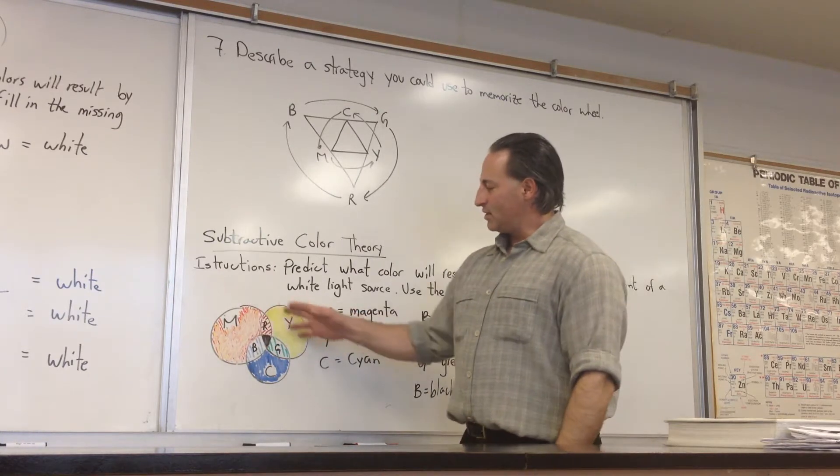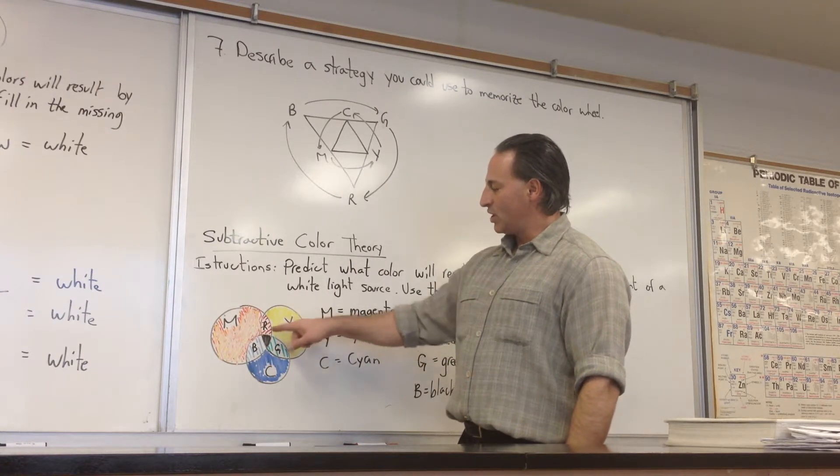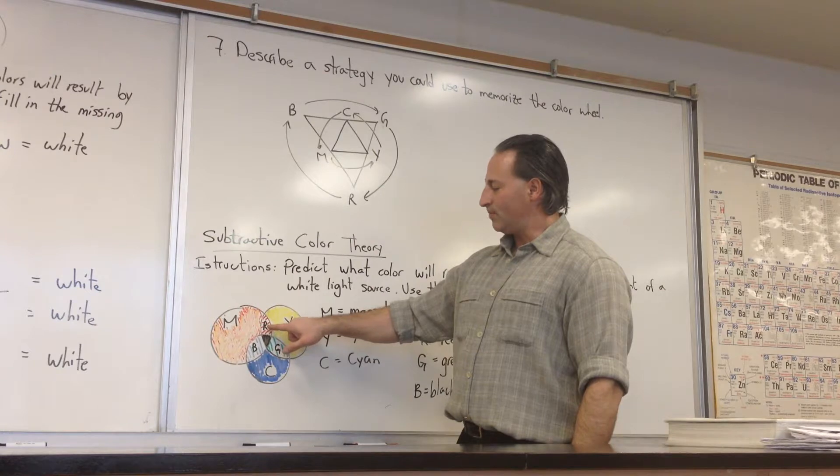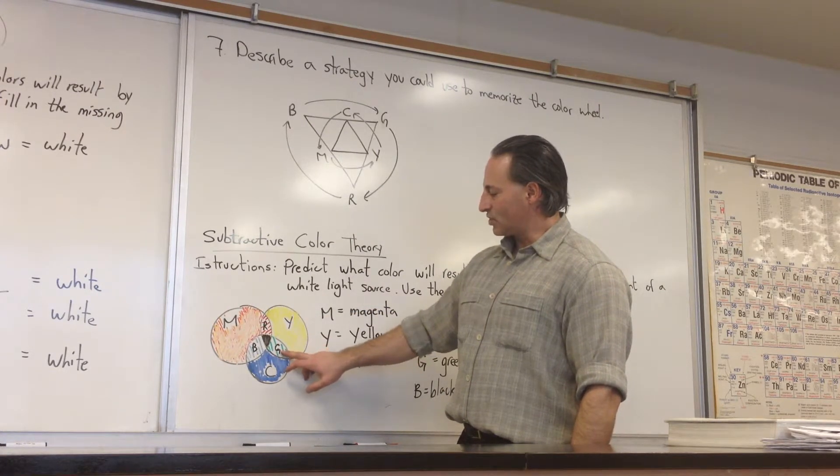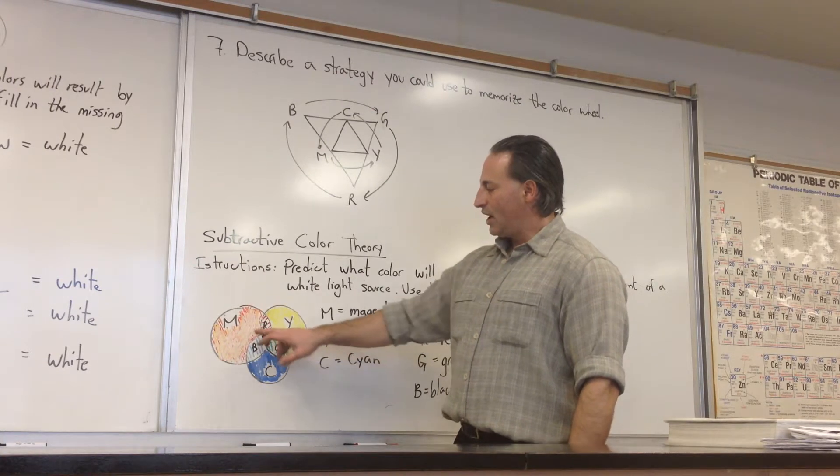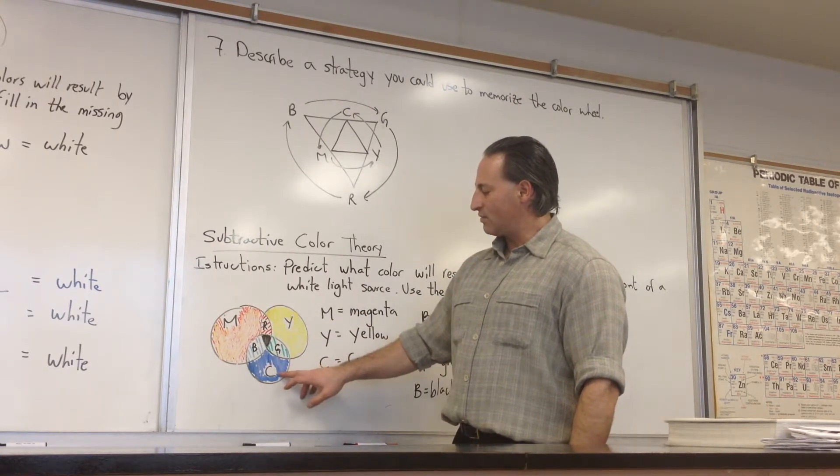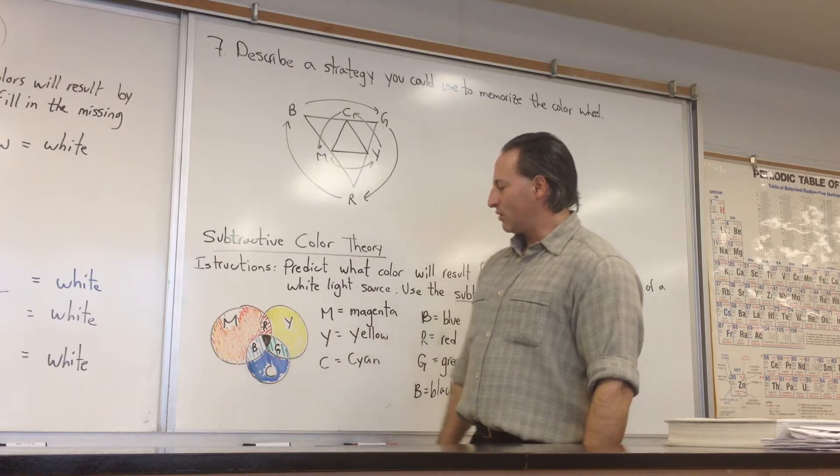If you place a magenta and a yellow filter in front of a white light source, you'll get red shining through. If you place cyan and yellow filters, green will make its way through. If you place magenta and cyan filters, then blue is what will make its way through.